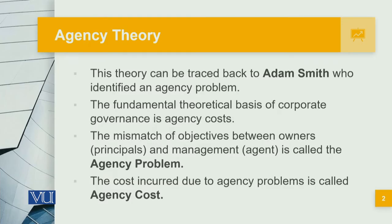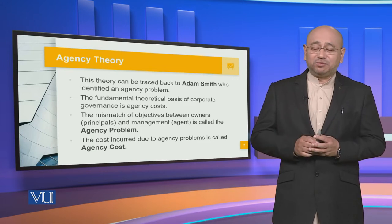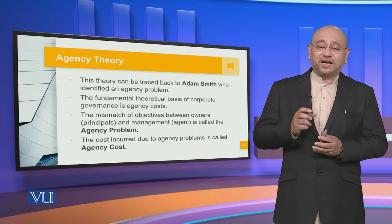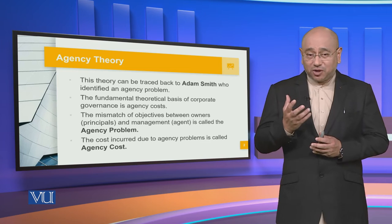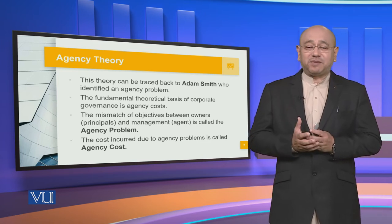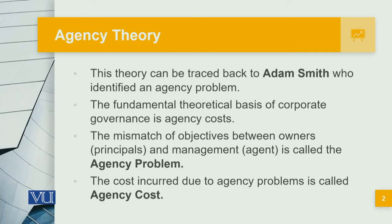The fundamental theoretical basis of corporate governance is agency costs, and when we look at this, a very important phenomenon tends to emerge and that is called the agency problem. Agency problem is the mismatch of objectives between owners — who are called the principals — and the management — who are called the agents.